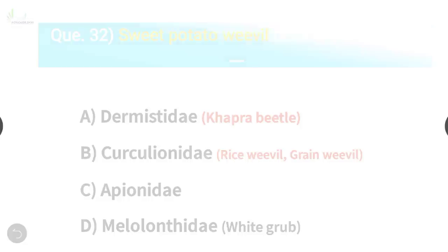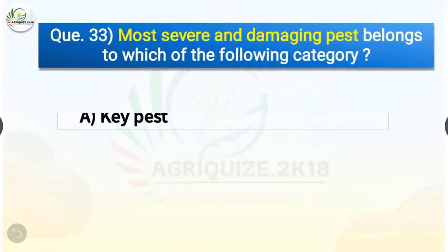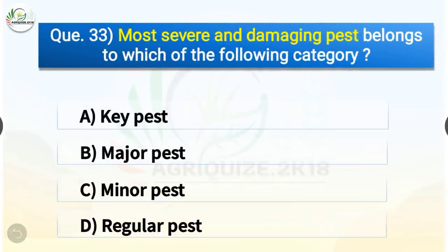Question number 33. The most severe and damaging pest belongs to which category? The options are key pest, major pest, minor pest, or regular pest. The correct answer is option A, key pest. The most severe and damaging pest belongs to the key pest category.